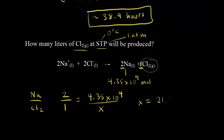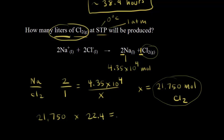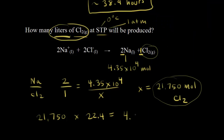We're trying to find liters of chlorine gas. Since one mole of an ideal gas occupies 22.4 liters at STP, we multiply 21,750 moles by 22.4 to get the volume in liters. That gives us 4.87 × 10⁵ liters of chlorine gas produced.